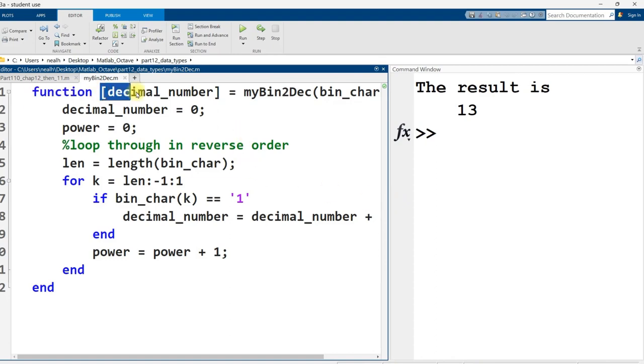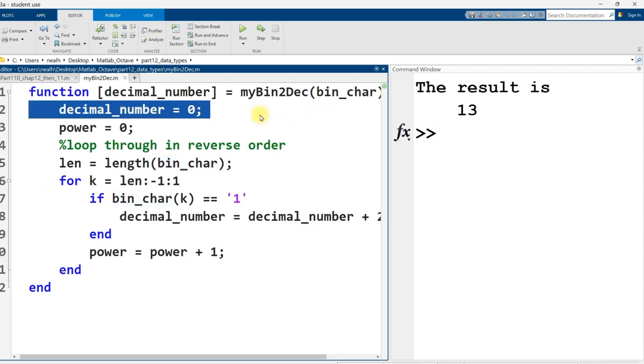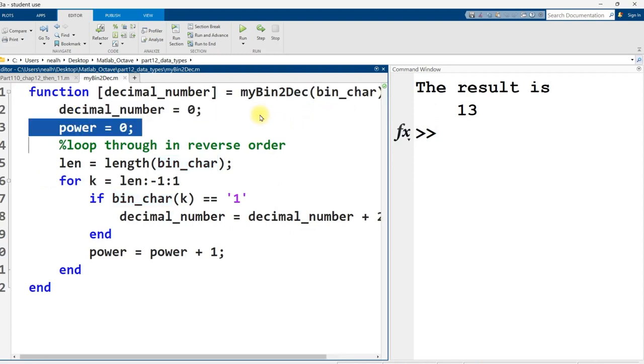All right, so this function has one returned value, which I named decimal_number, and has one input, which I named bin_char, because it's going to be a vector of characters representing binary. I'm going to start off my decimal number at zero. I'm going to keep track of the current power that I want to raise two to. So with the decimal number system, our first digit is the ones digit. Our second digit is the tens digit. Third digit is the hundreds digit. And we can think of that as the ones, 10 to the zero is one.